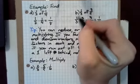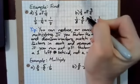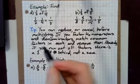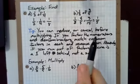Notice, we could have just cancelled right there and gotten our one fifth. So as a tip, you can reduce or cancel before multiplying.